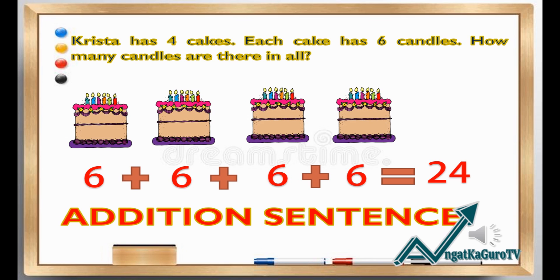In the first cake, you have 6. You will add another 6 candles, and another 6 candles, and another 6 candles in the fourth cake. And the sum is 24. In this process, you call this the addition sentence.